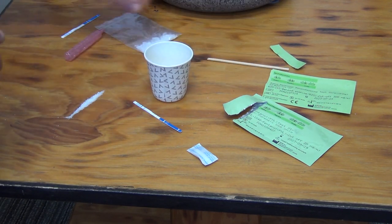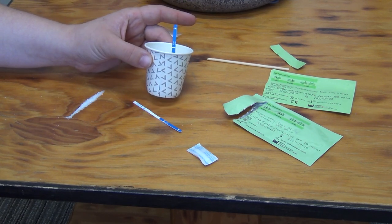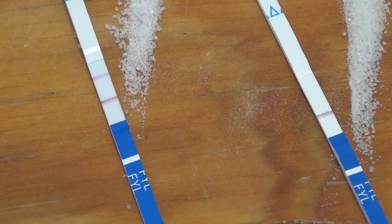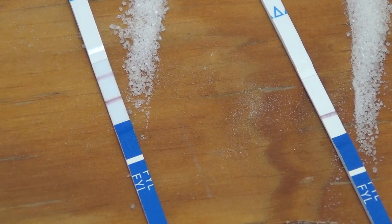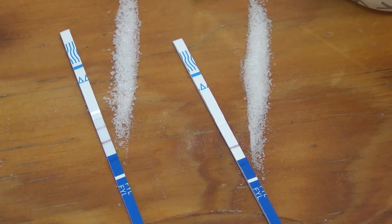There are a few things to be aware of. First, just because a strip comes back with a negative result does not mean that there is none of that substance throughout the entire supply you pulled your sample from. There could be trace or large amounts of that substance elsewhere in the supply. Be cautious.